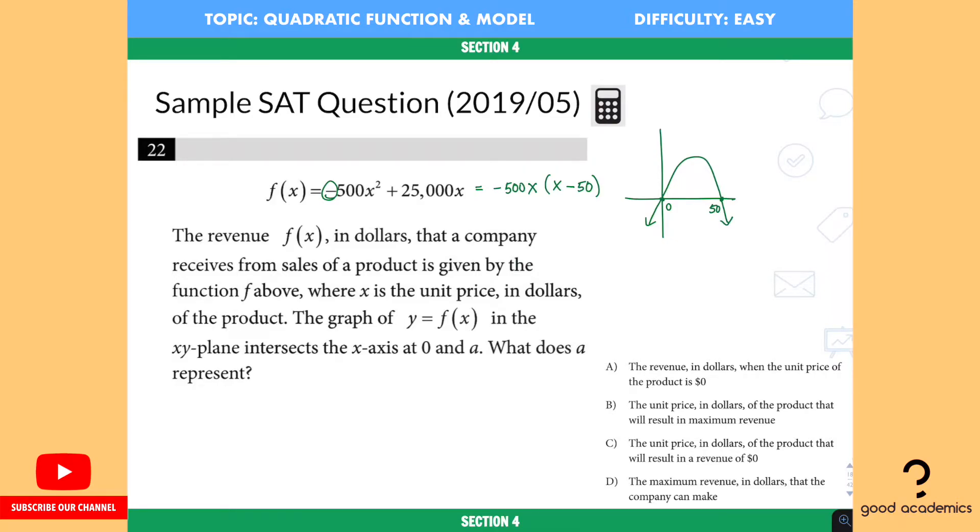So the way we can tell that it is 0 and 50 for the two roots is that you have an x right here, and then you have x minus 50 right here because we can set x minus 50 equal to 0. We wonder when the y value is equal to 0. So x minus 50 is equal to 0, x is equal to 50. So we have this graph.